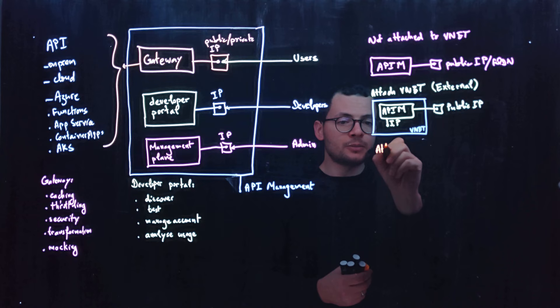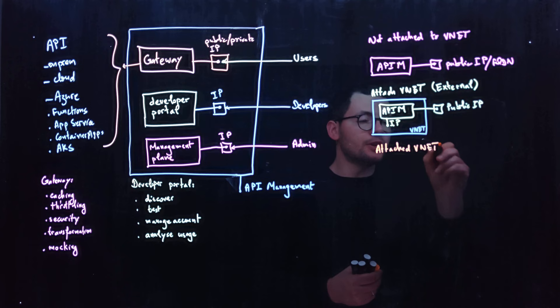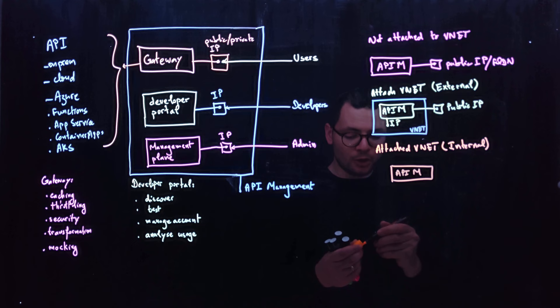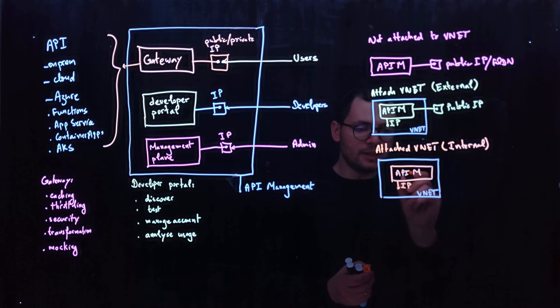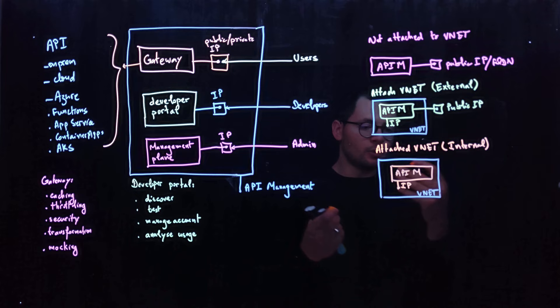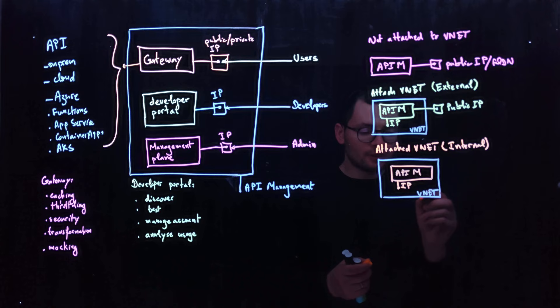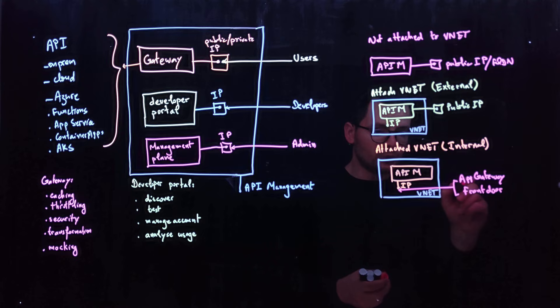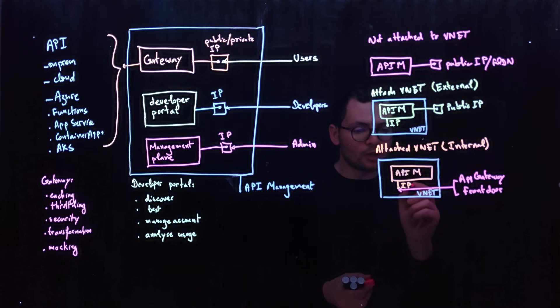The third option is to attach the API management to a virtual network using internal mode. In internal mode, the API management is attached to a virtual network and has only a private IP address — it will not have a public IP. This means it can be used by services deployed within the same virtual network or a peered virtual network. If you still want to expose your APIs publicly, you would rely on services like Application Gateway, which can be injected into the same virtual network to reach that private IP, or Azure Front Door, which can use Private Link to connect into the virtual network and reach that private IP.